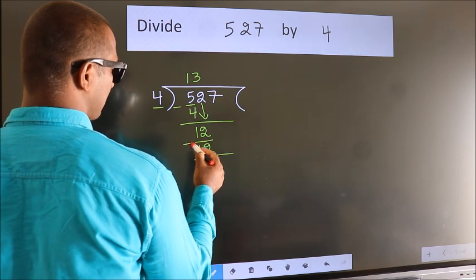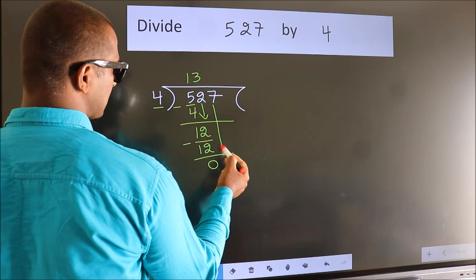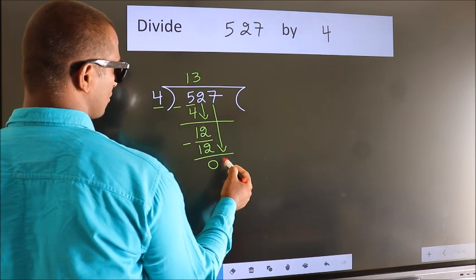Now, we subtract. We get 0. After this, bring down the beside number. So, 7 down.